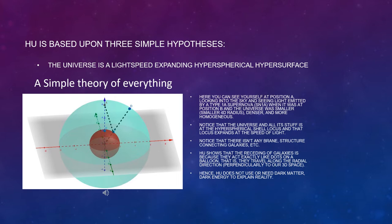Here you can see yourself at position A, looking into the sky and seeing light emitted by a type 1A supernova, SN1A, when it was at position B and the universe was smaller, with a smaller 4D radius, denser, and more homogeneous. Notice that the universe and all its stuff is at the hyperspherical shell locus and that locus expands at the speed of light. Notice that there isn't any brane, structure connecting galaxies, etc.